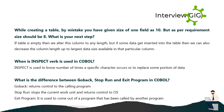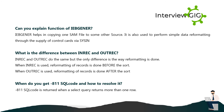When is the INSPECT verb used in COBOL? INSPECT is used to count the number of times a specific character occurs or to replace some portion of data. What is the difference between GO BACK, STOP RUN, and EXIT PROGRAM in COBOL? GO BACK returns control to the calling program. STOP RUN stops the current work unit and returns control to the OS. EXIT PROGRAM is used to come out of a program that has been called by another program. Can you explain the function of IEBGENER? IEBGENER helps in copying one sequential file to another and is also used to perform simple data reformatting through control cards supplied via SYSIN. What is the difference between INREC and OUTREC? INREC and OUTREC do the same task, but INREC reformats records before the sort while OUTREC reformats records after the sort.